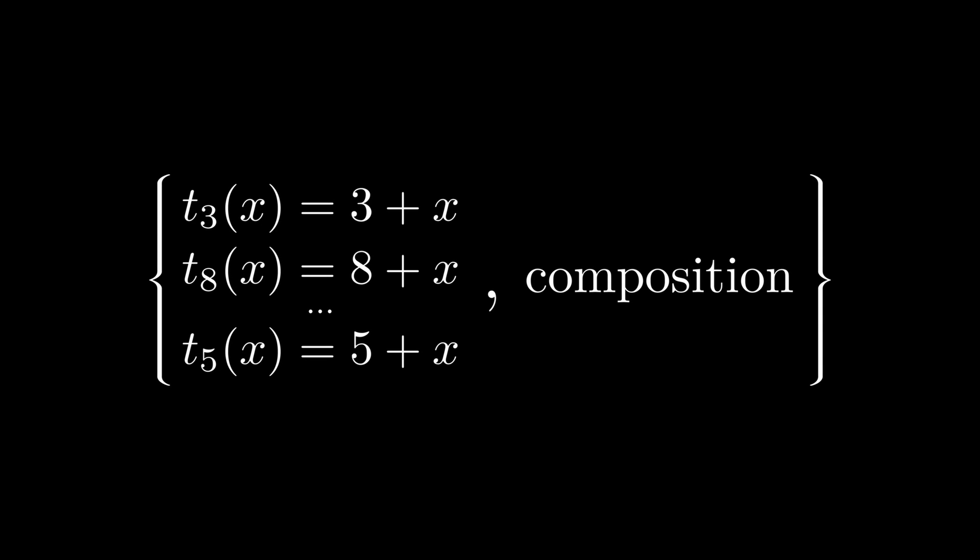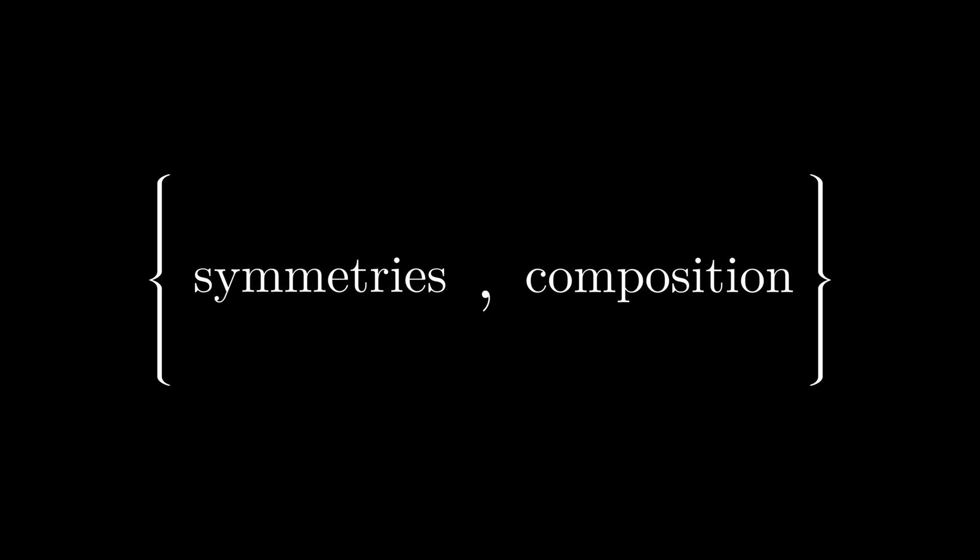Let's start with the first step. For every number in R plus, we mix it with the plus to receive a transformation that's begging for another number x, and once fed, will pop out a number. For example, the number 3 becomes the transformation T of 3. We do this for every number and equip the new set of transformations with composition. This procedure is called Cayley's theorem, and it guarantees a group with the same behavior of the type symmetries, composition.